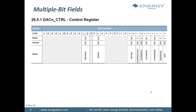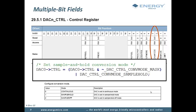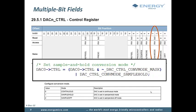For instance, the DAC control register contains a 2-bit wide field which sets the conversion mode. The possible values for the conversion mode are found in the register description. This is how we could use CMSIS to set the conversion mode to sample and hold. Note that we first have to clear the bits in the bitfield by ANDing the register with the inverted bitfield mask. Then we OR in the value of the field.